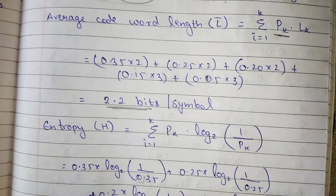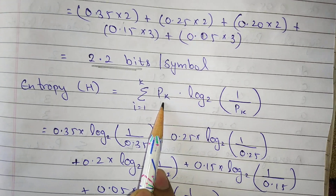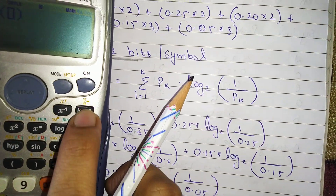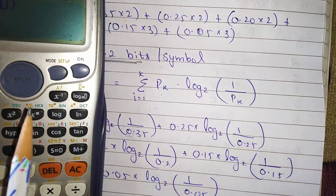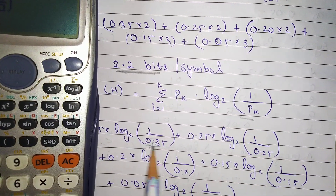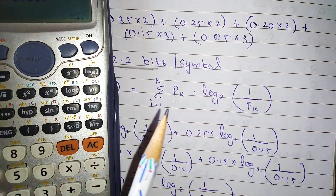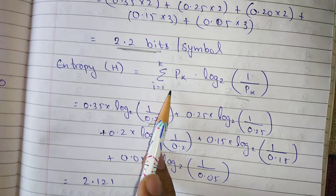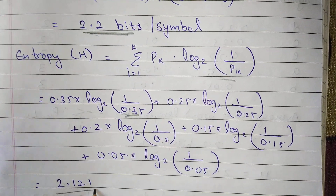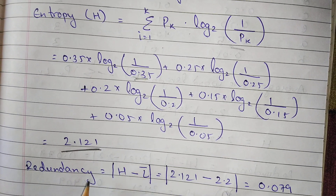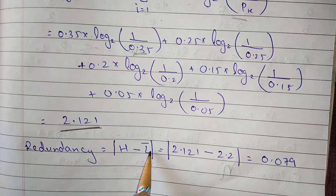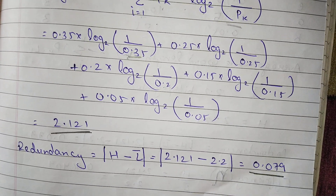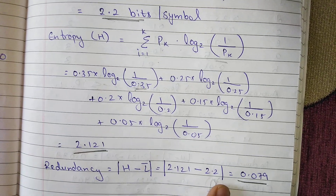Now let us find entropy. Entropy is the summation of p(k) × log base 2 of (1/p(k)). In your calculator, use log base 2 and enter 1 divided by each probability, then multiply by that probability. The final answer is 2.121 bits — this is the entropy. Redundancy is |H − L̄| = |2.121 − 2.2| = 0.079.